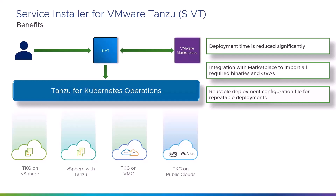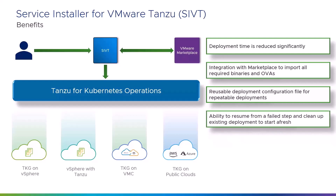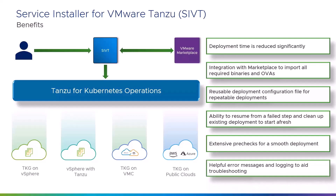A sample JSON file is available in the SIVT VM that you can use as a template. SIVT allows you to resume a deployment in case of a failure — you do not need to restart from the beginning. Should you need to start afresh, you can clean up an existing deployment easily. SIVT performs several pre-checks to ensure that the deployment can proceed smoothly and there are no missing prerequisites. SIVT also provides helpful error messages and logs that you can use for troubleshooting.